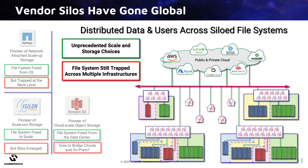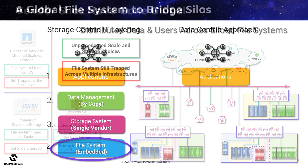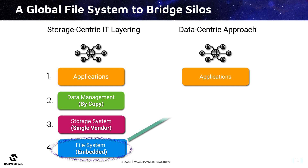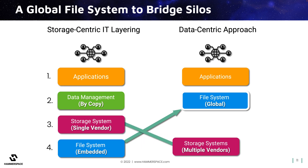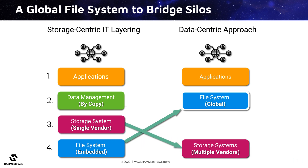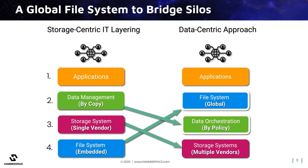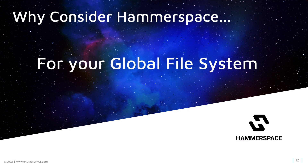This brings us back to why the global file system was introduced in the first place. The concept of a global file system is to elevate the metadata layer that users and applications access out of the storage system — to enable it to span multiple storage systems or storage pools, and to enable global management of data placement and services across those silos. Which brings us to today's topic: why consider Hammerspace for your global file system.